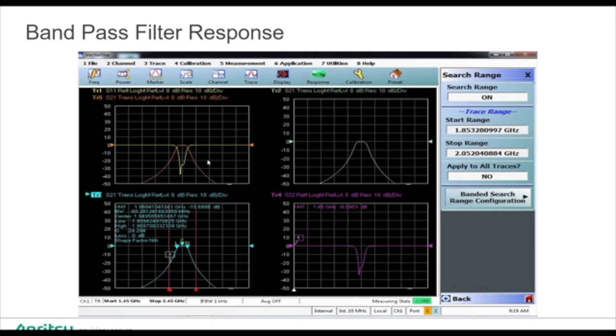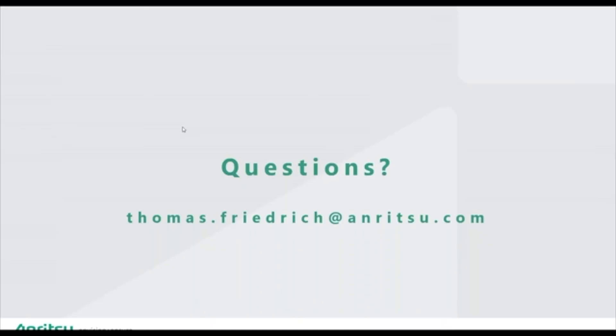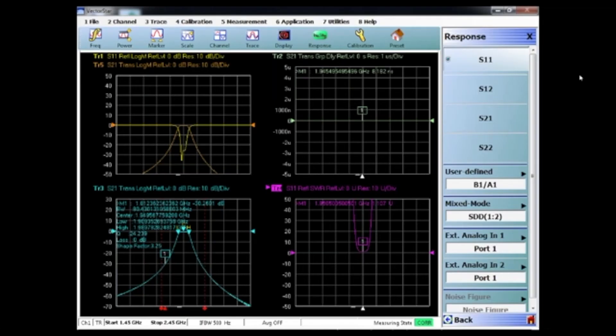Next question: Do all Anritsu VNAs have the Q bandwidth measurement capability, and is it an option or standard? They all do. All of the benchtop models will have the shape factor, Q factor, those types of statistics as well. And I'll bring up a VNA display here in a second. Those are standard. They're not an option, so they're in every benchtop model that Anritsu has.